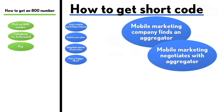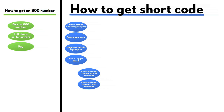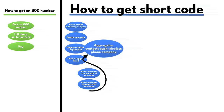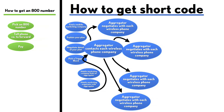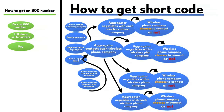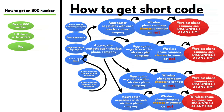The mobile marketing company has to explain your plan to the aggregator, and they decide if the details are going to work out. Once the aggregator agrees, they have to contact each individual wireless phone company, explain everything you're going to do, and negotiate so everyone agrees. The wireless phone company can then choose to connect your shortcode to their customers — or not. Some could choose to connect you while others decide not to, and the wireless phone company could change its mind at any time.